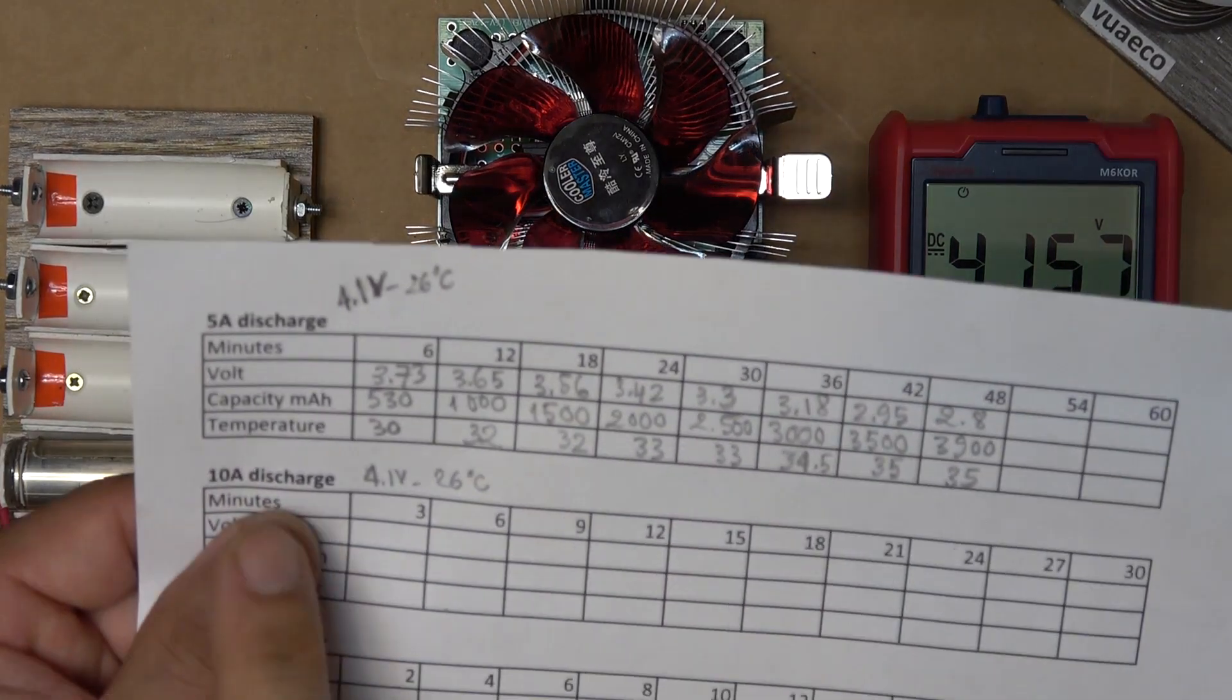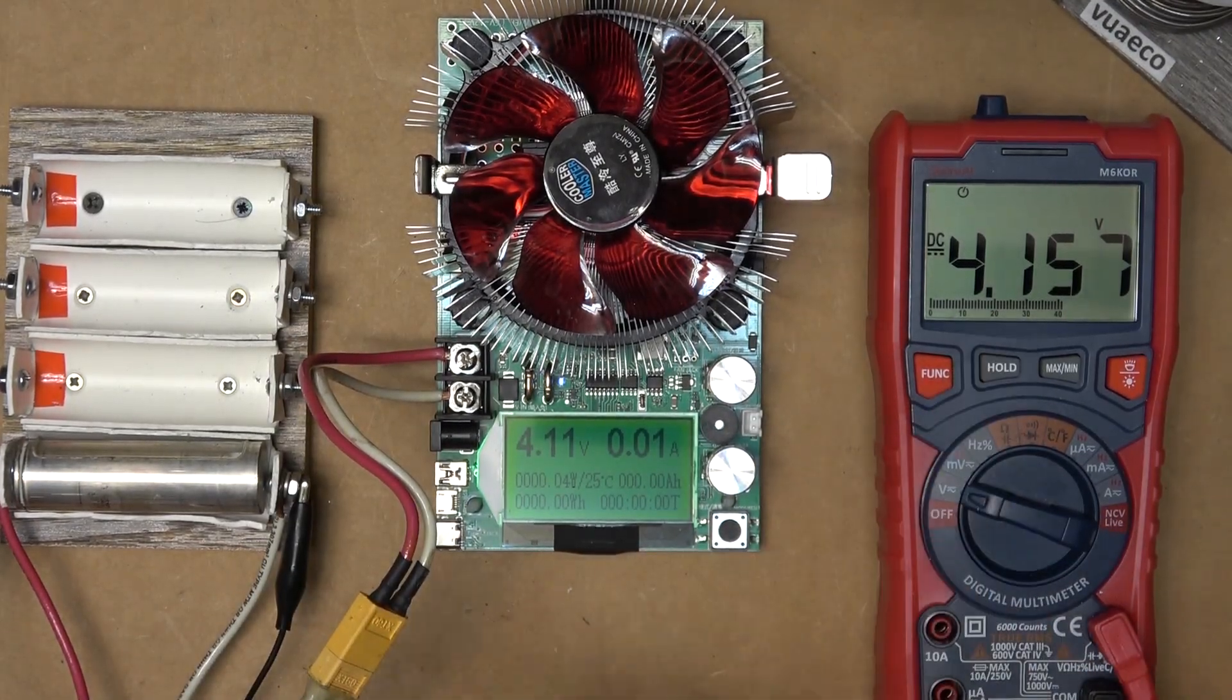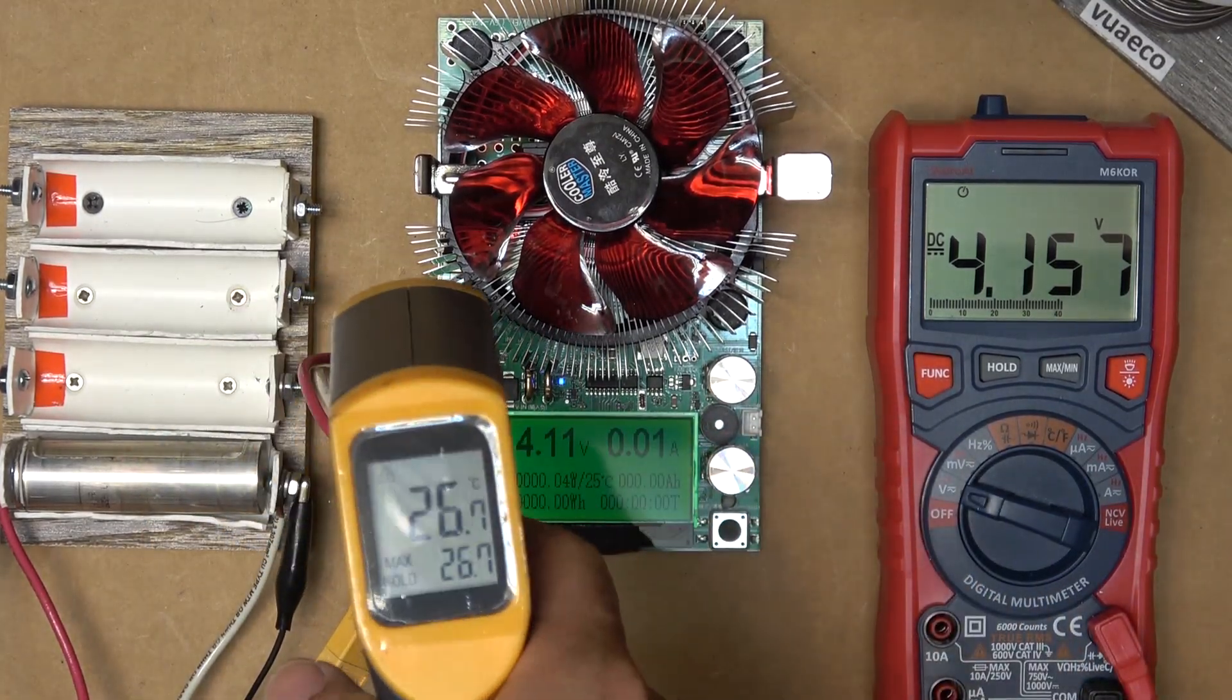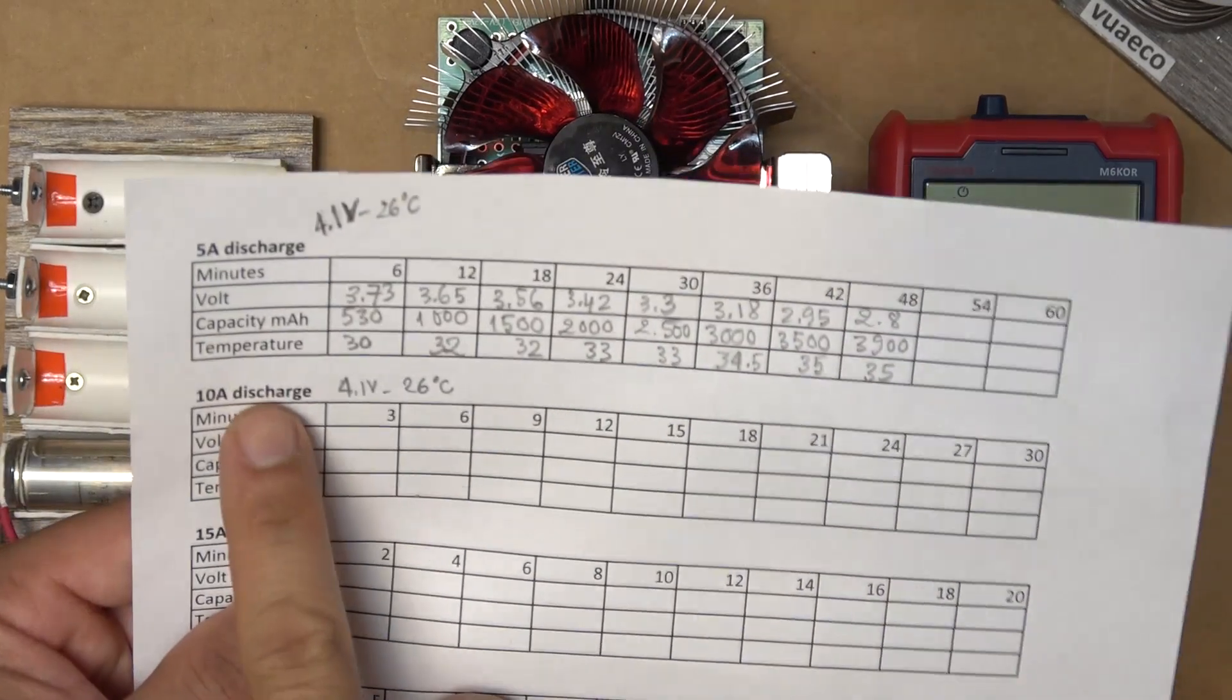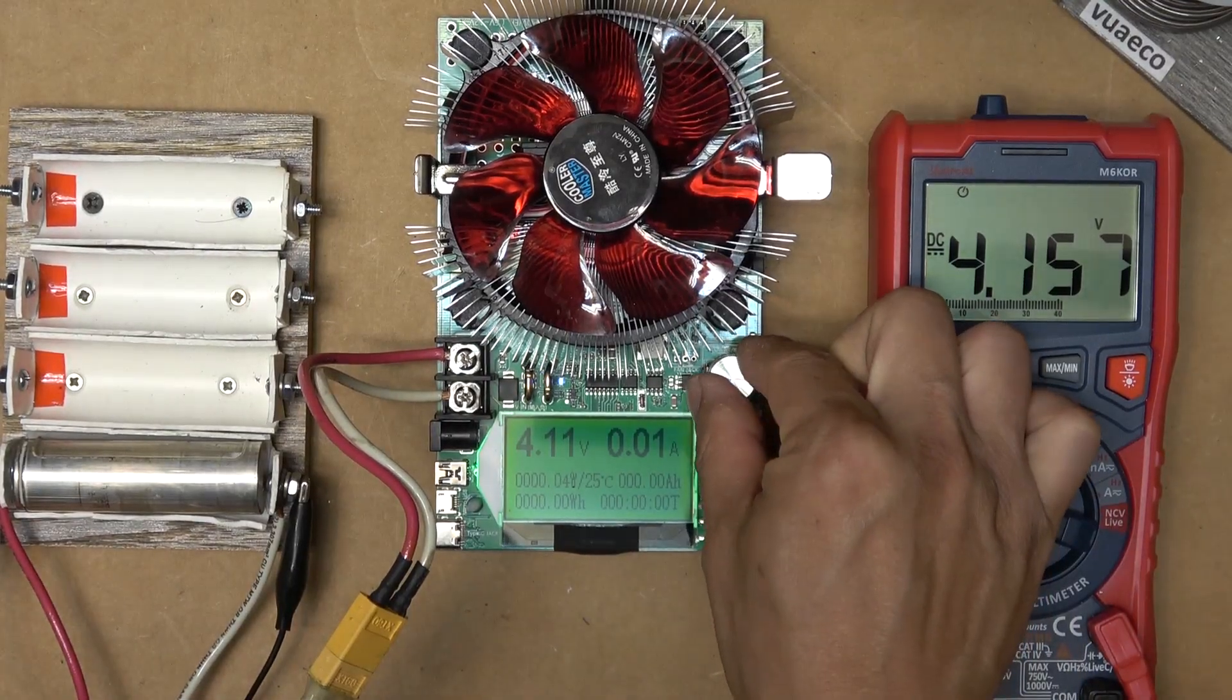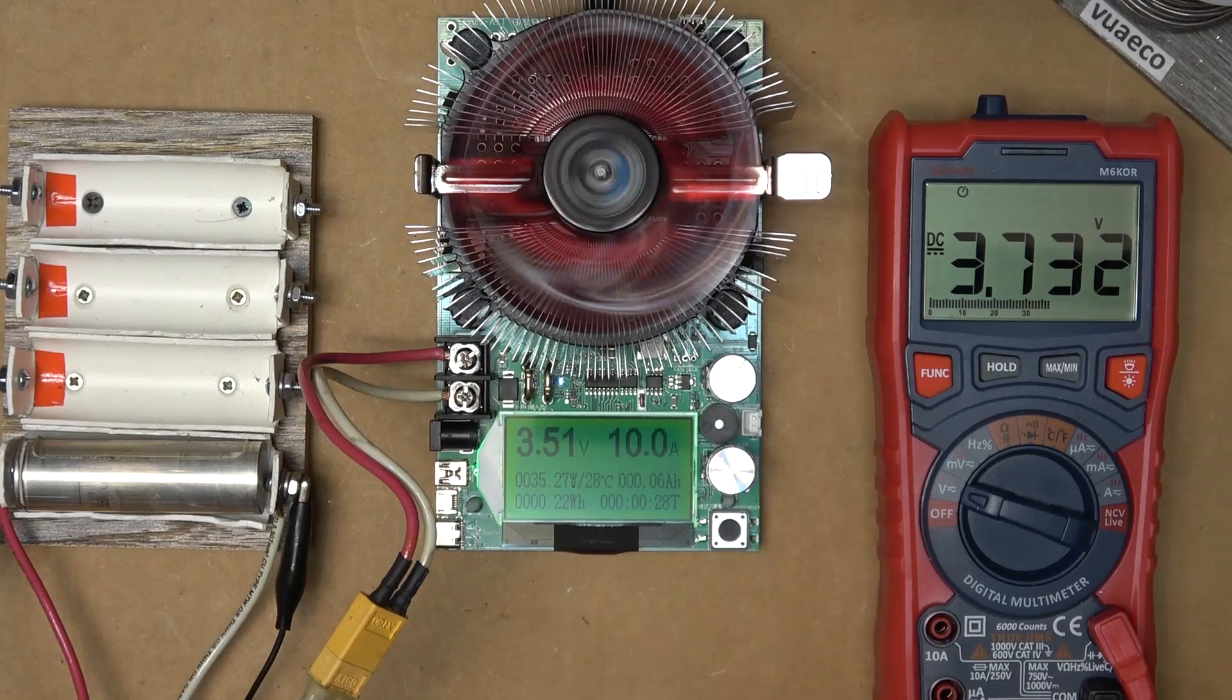Next test is my 10 amp discharge test. Battery right now is at 4.15 volts and temperature is at 26 degrees Celsius. This battery is about 5 amp hour so a 10 amp discharge is going to last 30 minutes in theory. And we have exactly 10 amps.